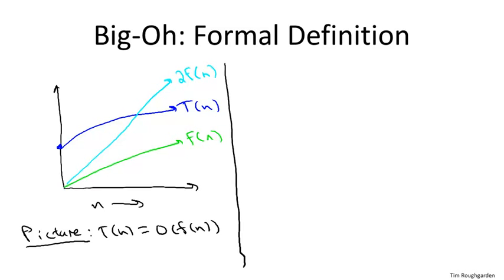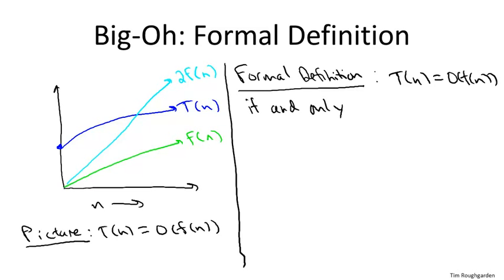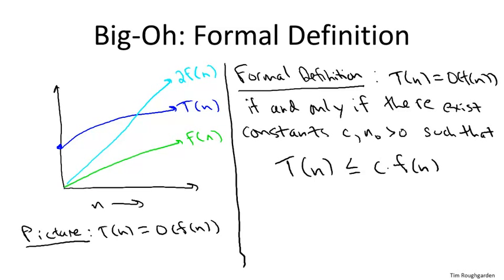So finally, let me give you an actual mathematical definition that you could use to do formal proofs. So how do we say in mathematics that eventually it should be bounded above by a constant multiple of F of n? We say that there exist two constants, which I'll call C and n naught, so that T of n is no more than C times F of n for all n that exceed or equal n naught.